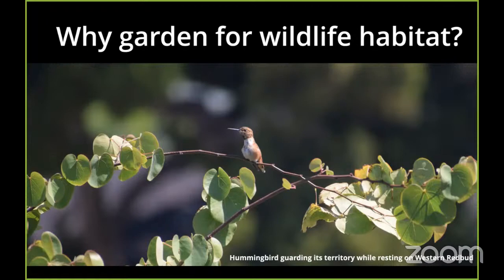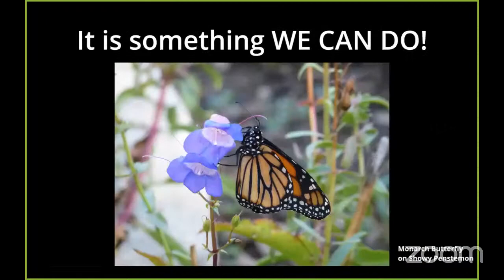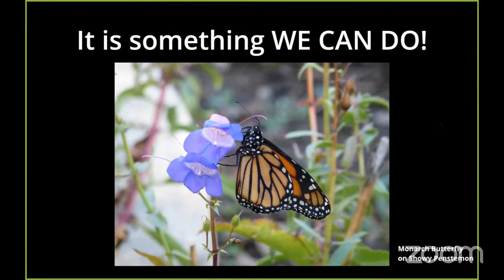I'm happy to stay at the end after 12 and answer more personal, specific questions as well. Why should we consider using the space in our yards to garden for wildlife habitat versus anything else? One of my big answers and big motivations is that it's something we can actually do. When we think about the environmental issues that we are collectively facing, there are some huge issues that we cannot do anything about, or that we can contribute to but it feels like such a small piece of any solution. We're not going to save the world with any one of our individual yards, but habitat gardening is something we can do.